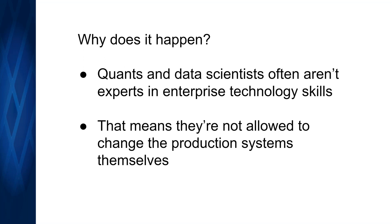So why does this happen? First reason: quants, data scientists, financial engineers — that sort of developer — are really good at solving business problems using analytics and data, but what they often aren't as focused on is enterprise technology skills: things like corralling giant amounts of data, working effectively with big teams of developers, satisfying all the technology controls that modern institutions have. It's a different skill set, and what that means is they're generally not allowed to change the production systems themselves. Quants still want to get stuff done without waiting on the technology people, so they create their own R&D technology stack, which leads to siloed teams and siloed technology stacks — built for rational reasons initially but leading in the medium and long term to long delays on deploying new ideas and stifling innovation.